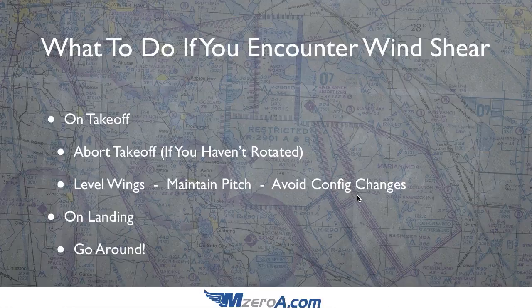Also, in some aircraft you bring the throttle back to a cruise climb at a certain altitude. If you encounter wind shear, get that throttle back to full power and avoid configuration changes. On landing, it's very simple: go around. Follow your go-around procedure, but hold off on configuration changes. If the gear's down, leave it. If the flaps are down, leave them until you're up and out of the wind shear.